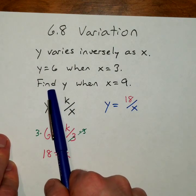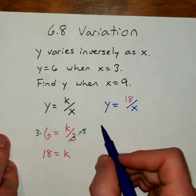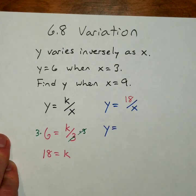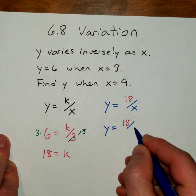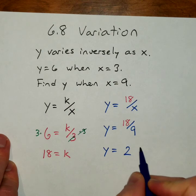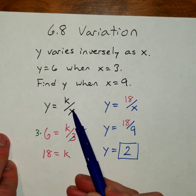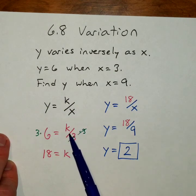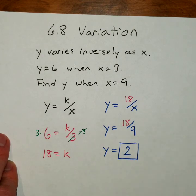And we would have y is equal to 18 divided by x. So 18 goes in for k. And then we can jump down to this last line, find y when x is 9. So we plug the x value of 9 in. y equals 18 divided by 9. And of course, 18 divided by 9 is 2. And that is our answer for this one. So the main idea is you set up your equation, then you find k, and then you use k to find y.